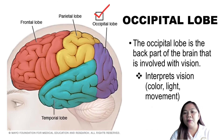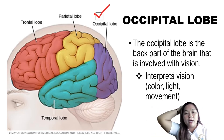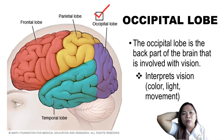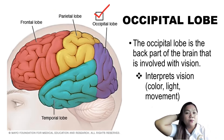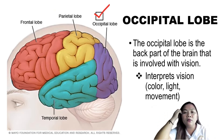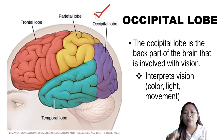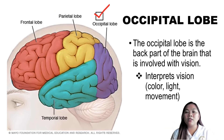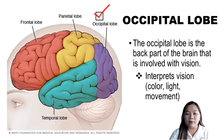Then we also have the occipital lobe. The occipital lobe is the back part of the brain that is involved with vision. Our occipital lobe interprets vision, color, light, and movement.